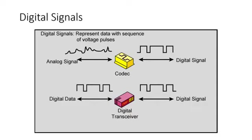A digital signal is a sequence of voltage pulses that may be transmitted over a wire medium. For example, a constant positive voltage level may represent a binary zero, and a constant negative voltage level may represent a binary one, or vice versa. Digital signals can be used to transmit both analog signals and digital data. Analog data can be converted to digital using a codec, which is a coder-decoder. A codec takes an analog signal that directly represents voice data and approximates that signal by a digital bitstream. At the receiving end, the bitstream is used to reconstruct the analog data.